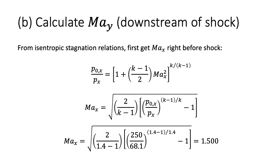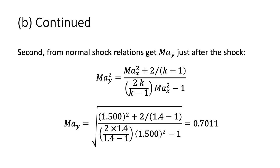For Part B, we calculate the Mach number just downstream of the shock in two steps. First, we use the isentropic stagnation relations to calculate the Mach number just before the shock from the known ratio of the upstream stagnation pressure and static pressure just before the shock, giving M_X = 1.500. Second, from normal shock relations, we calculate the Mach number just after the shock to be 0.7011. Note that figures or an online calculator for isentropic conditions and normal shocks could alternatively be used, and the same is true for all remaining parts of this example.